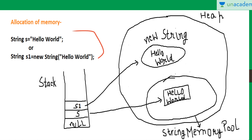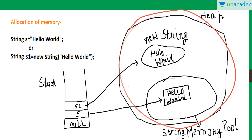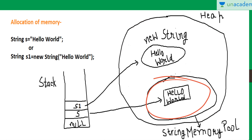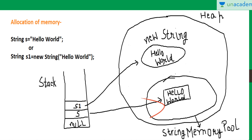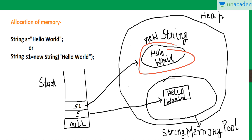When we use a literal or constant, it gets memory in the string memory pool. Basically, under the heap memory we have some memory called the string memory pool, in which all the string constants get stored. So if we assign 'hello world' as a literal, it gets stored in the string memory pool and a reference s will start pointing to it. If we create a string using the new keyword, an object is created in the heap, but the actual constant 'hello world' still gets stored in the string memory pool.